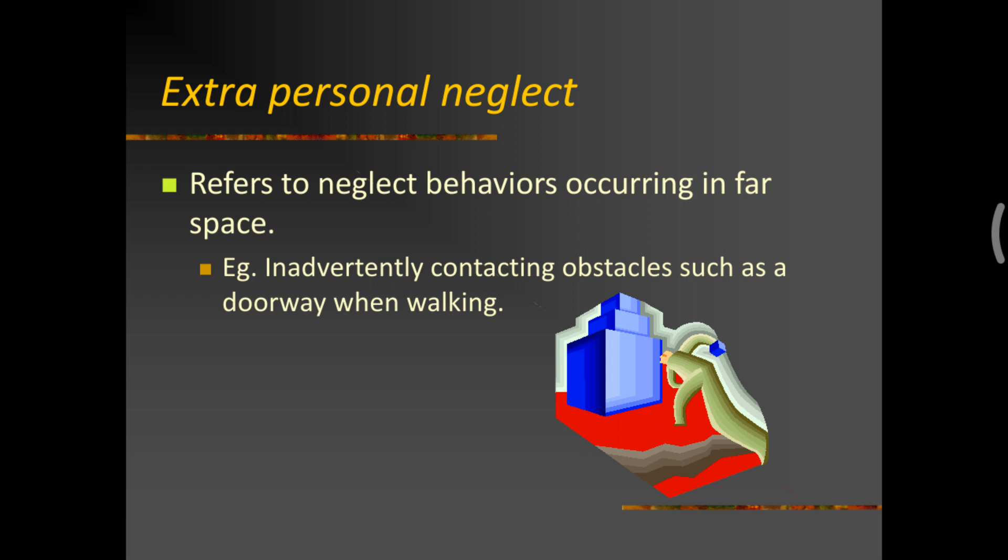Extrapersonal neglect is the one where the person has difficulty in seeing things which are further away. So, what happens is he might be able to see and tell what are there. But when he walks on, he might consistently go and hit against a door wall. And this is called as an extrapersonal neglect. When all of us move through a doorway, we normally move through the center of the doorway. But since this person sees only a half of it, he might be consistently moving through only one side of the doorway. So, this might lead to him colliding onto the wall of the door. Again, this is called as extrapersonal neglect.